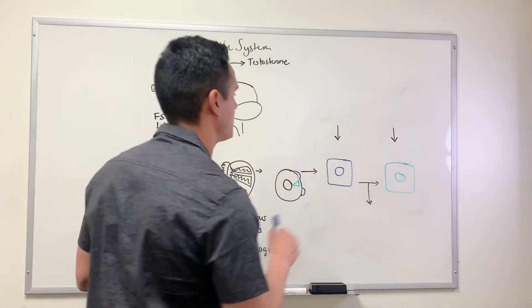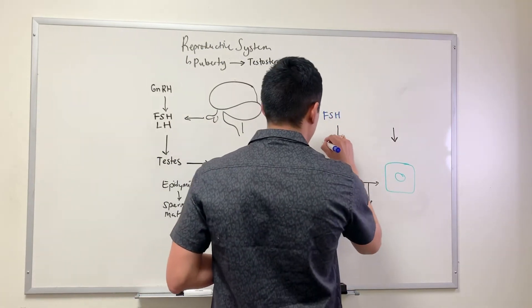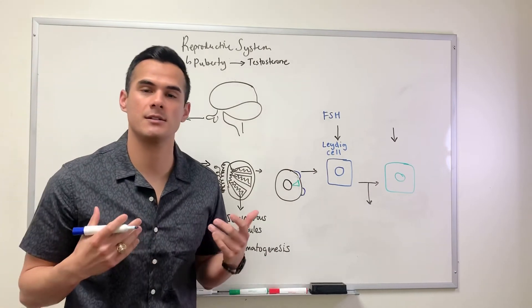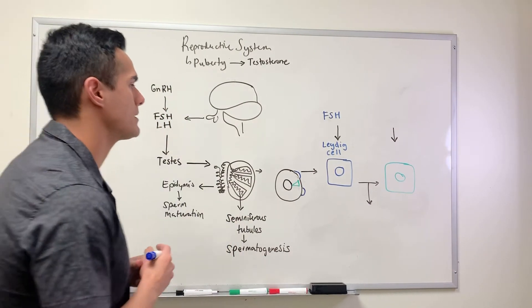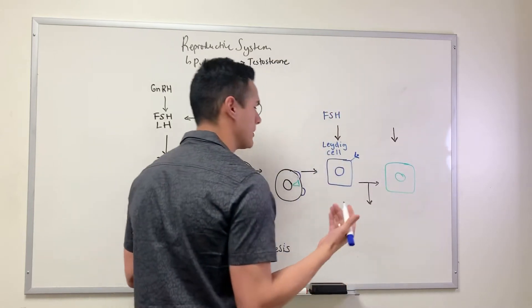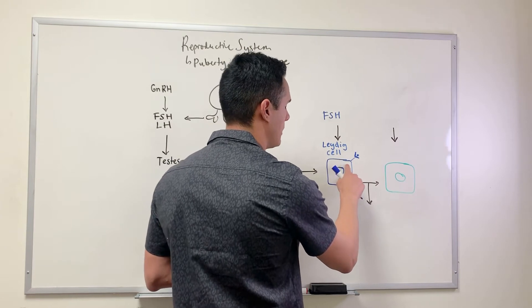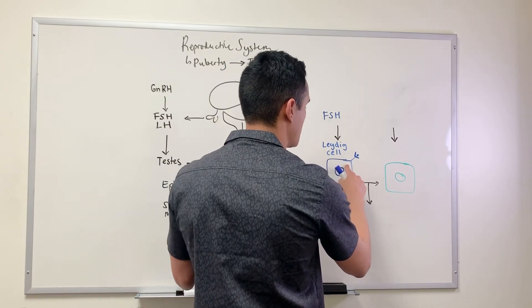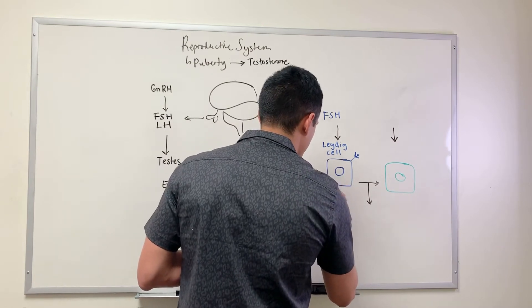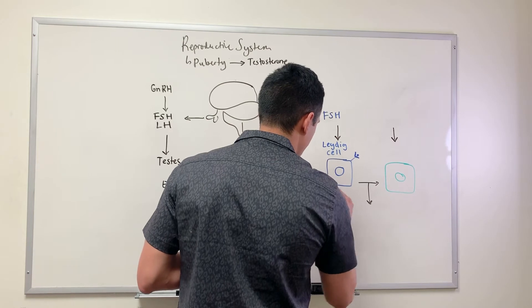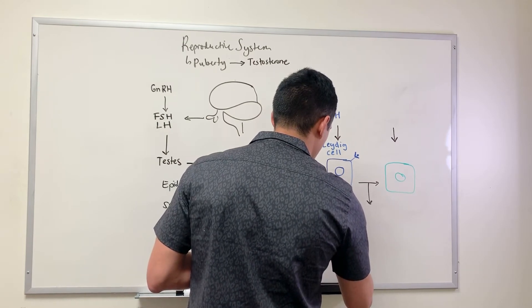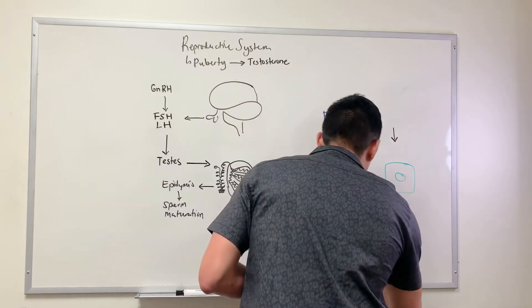FSH targets a cell known as the Leydig cell - named after the physiologist who discovered it. When FSH binds to its receptor, because this is a peptide hormone, it initiates a signaling cascade using our secondary messenger system to synthesize testosterone. Once it binds its receptor, we increase cyclic AMP, get protein kinase A, and it activates the enzymes required to synthesize testosterone.